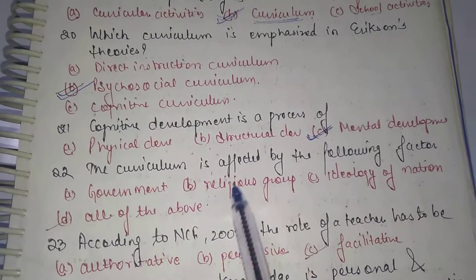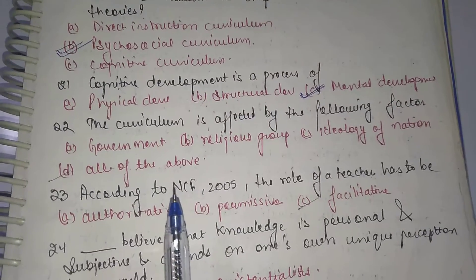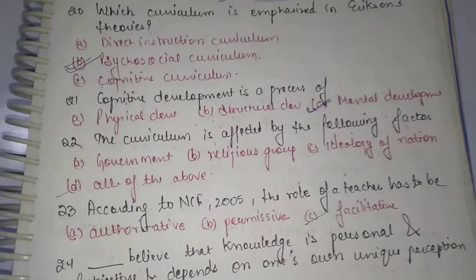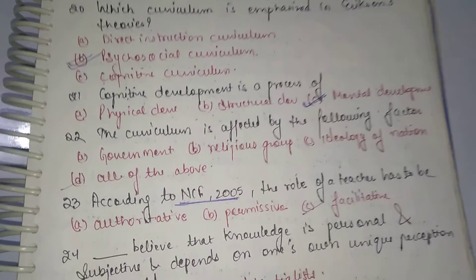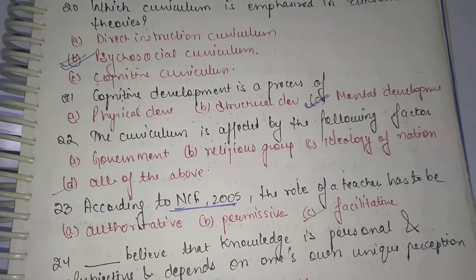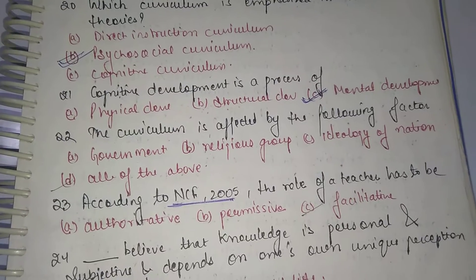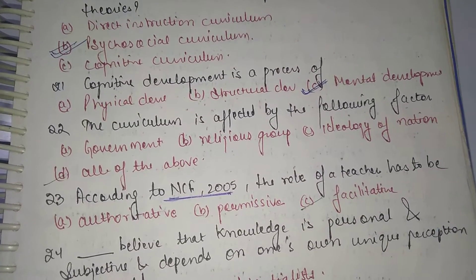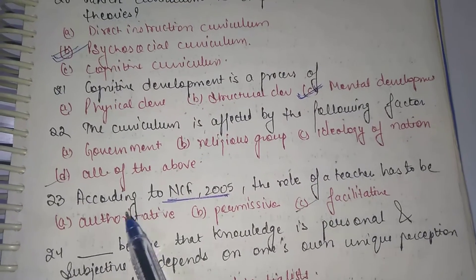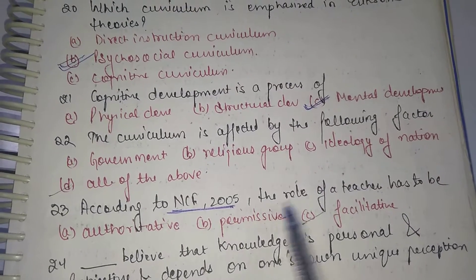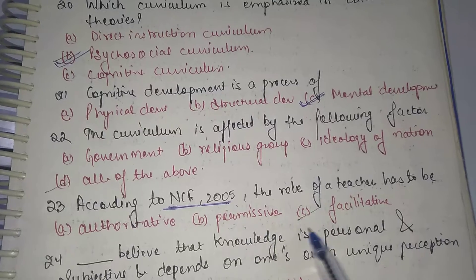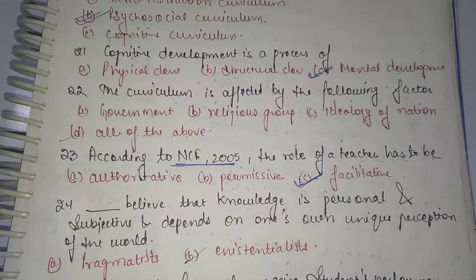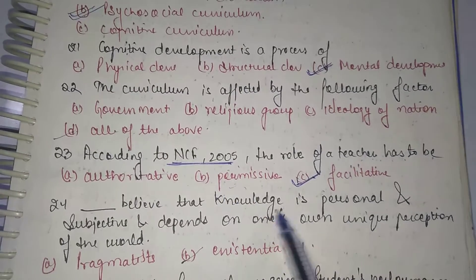Next very important topic: NCF 2005, National Curriculum Framework, which basically tells us about what all modifications are needed in the present curriculum. So according to NCF 2005, the role of a teacher has to be authoritative, permissive or facilitative. Obviously the role of the teacher should be facilitative.